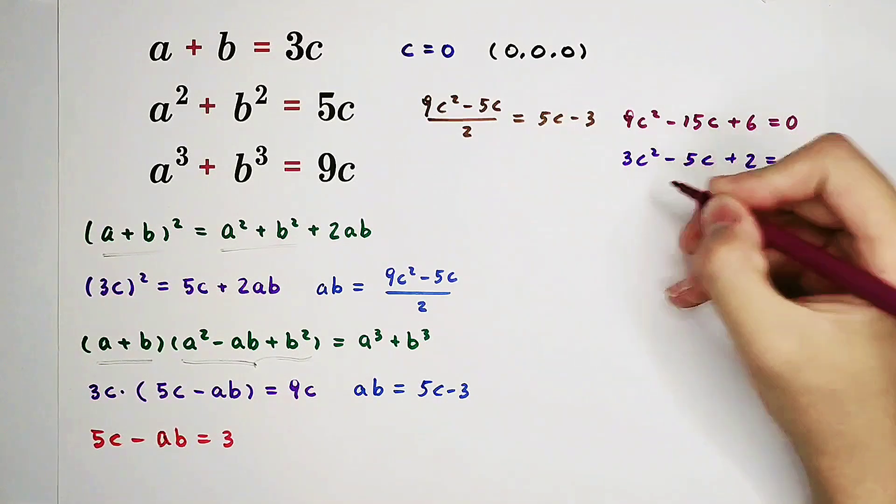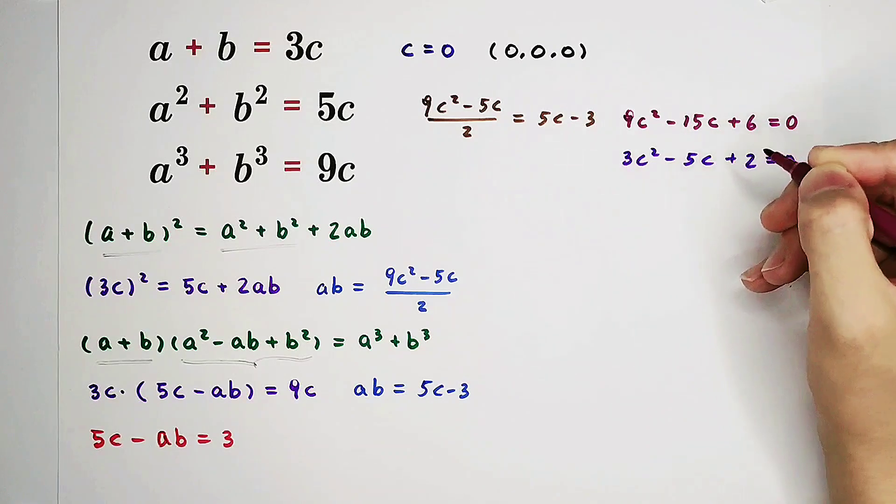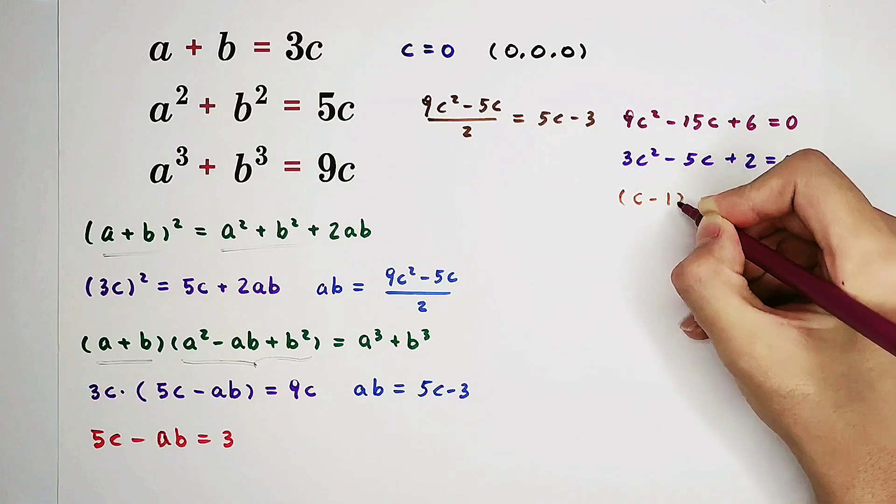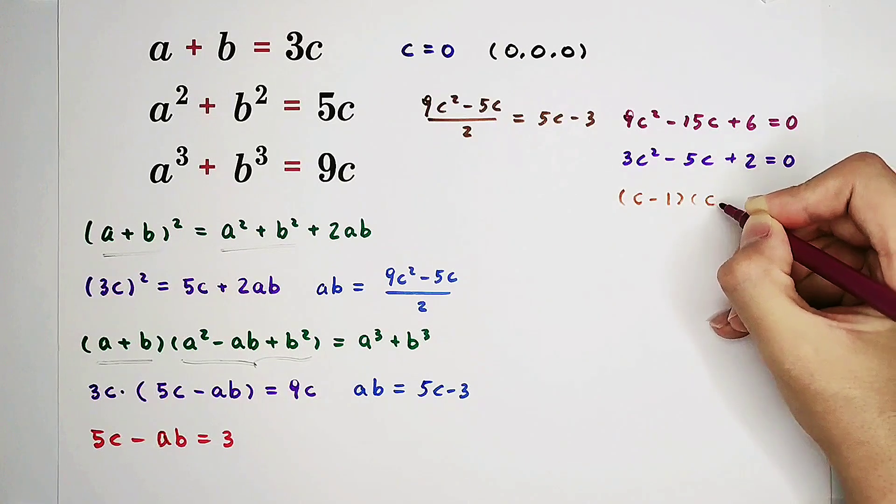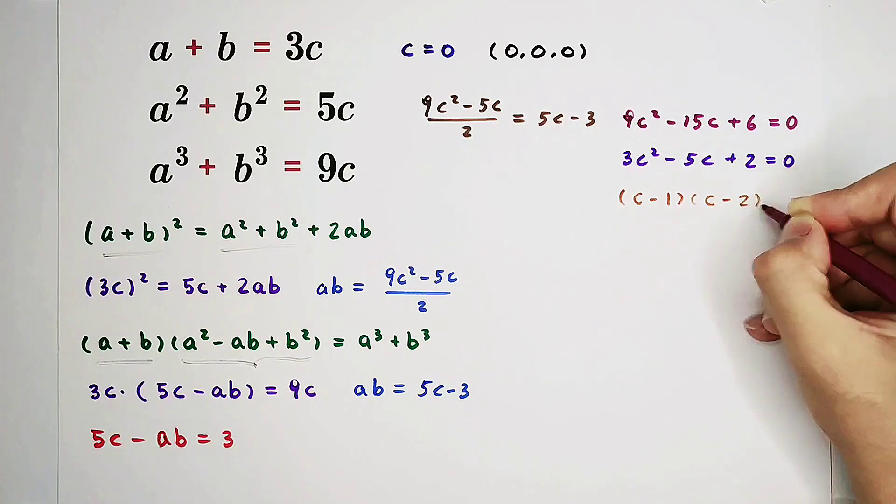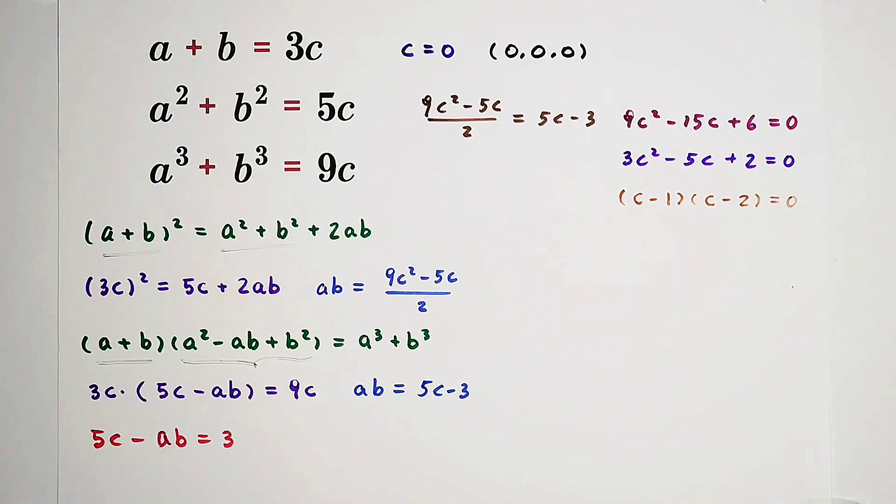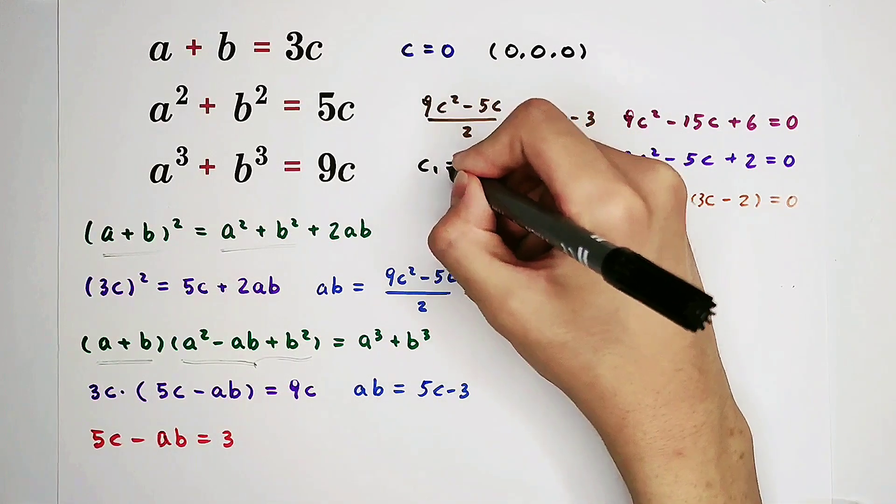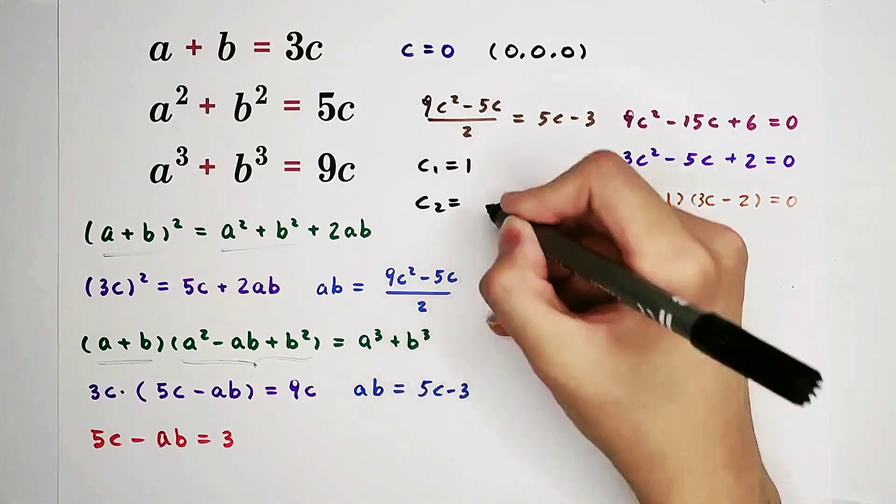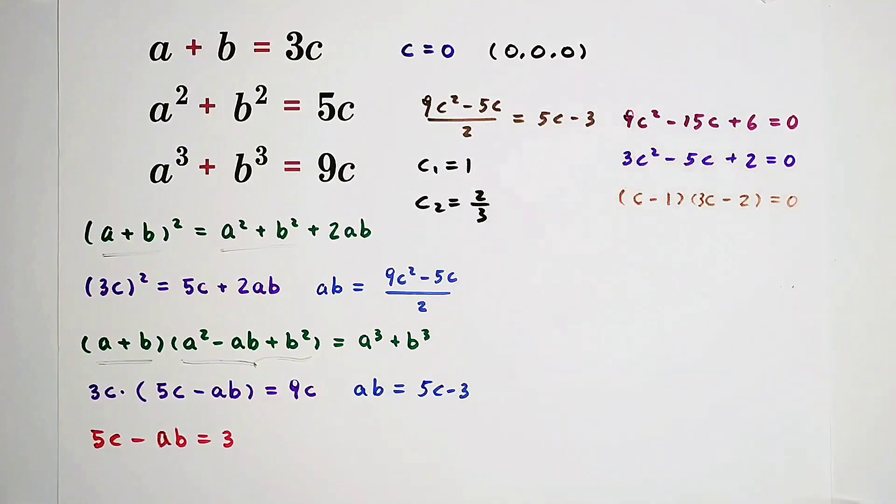Of course, then it can be factorized as c minus 1, then times c minus 2 thirds equals 0. So that means c1 equals 1, c2 equals 2 thirds. So now, we also get two cases.